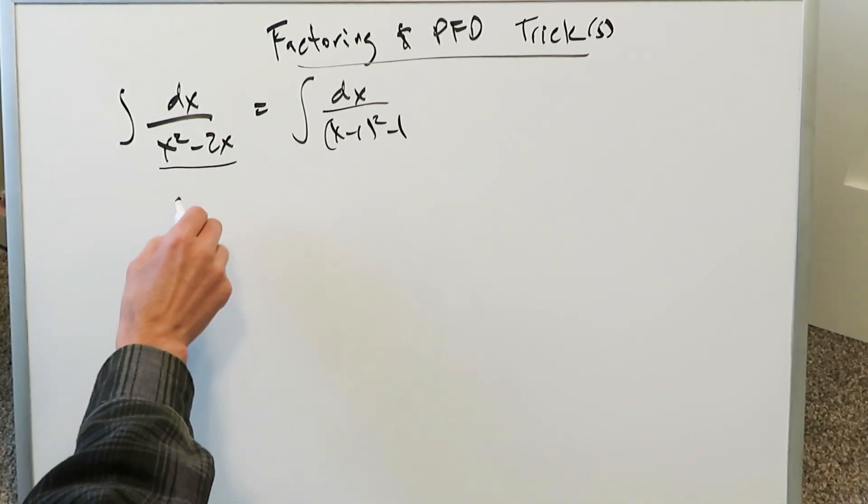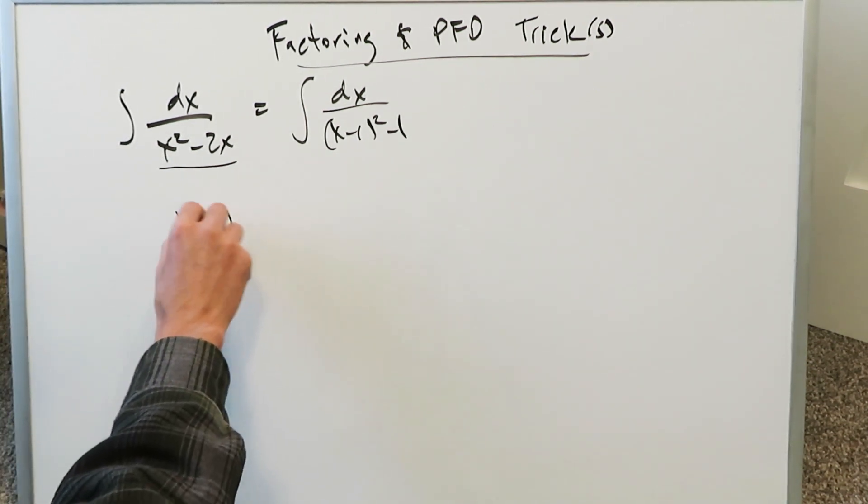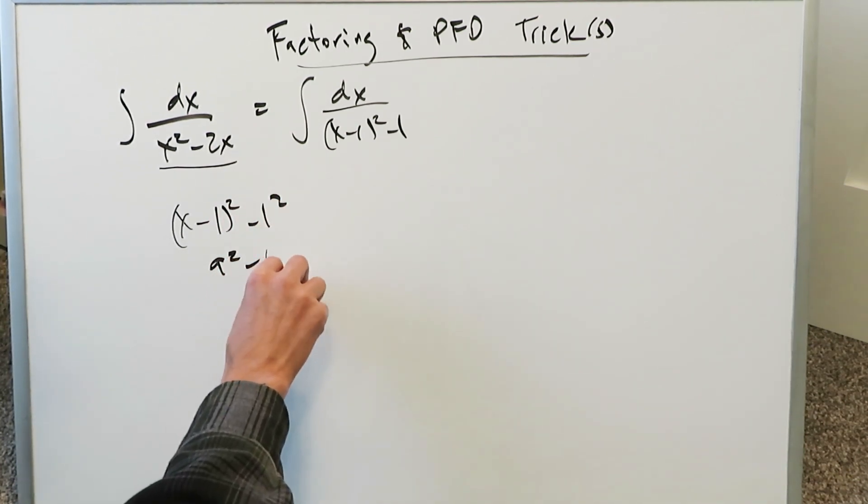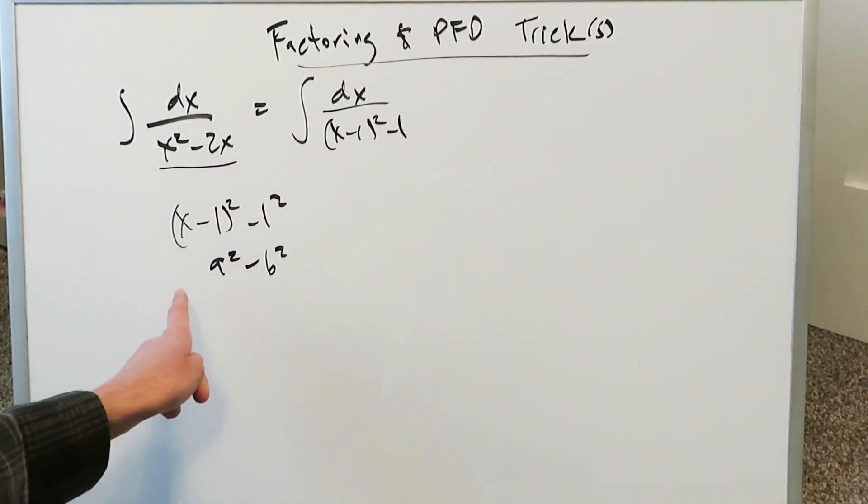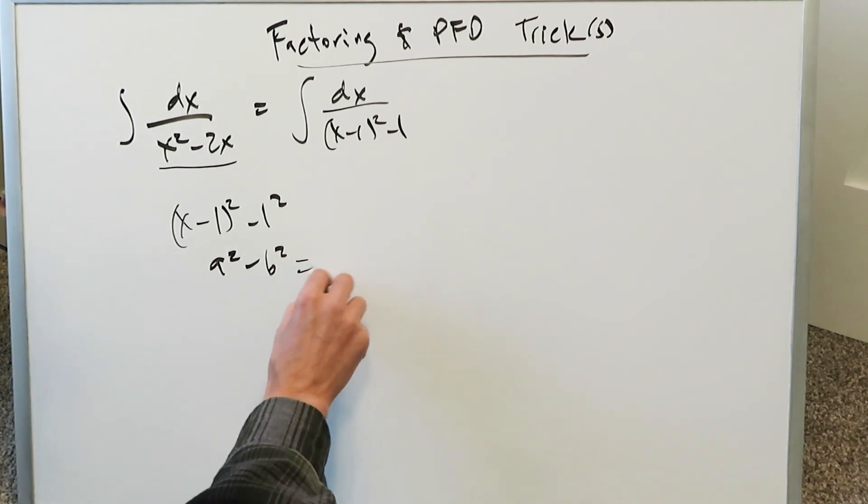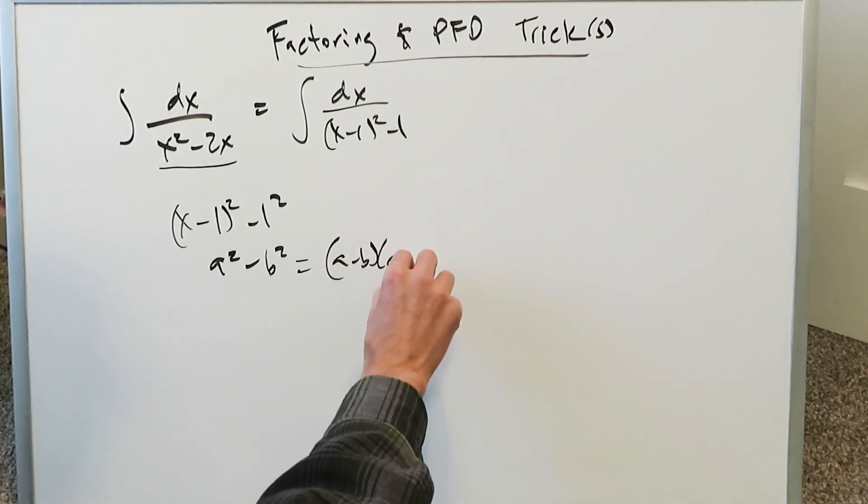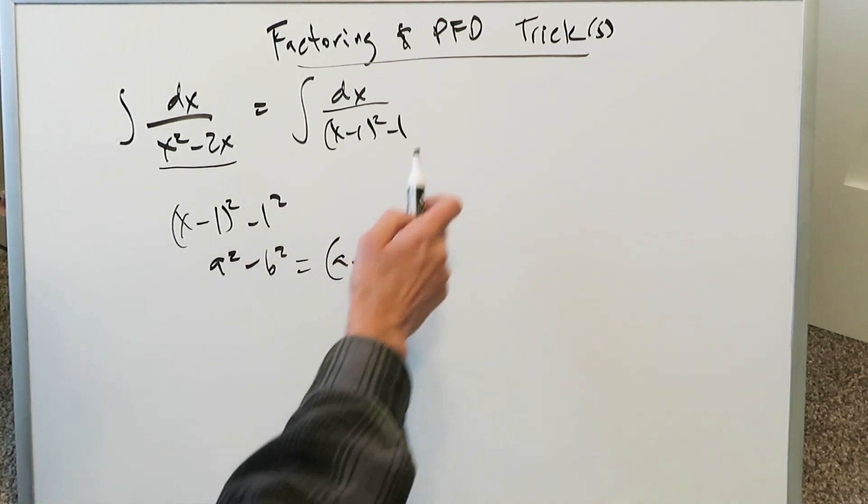When you're looking at that, you're really looking at something which looks like x minus 1 whole square minus 1 squared, which is a squared minus b squared. And right there is perfect. a squared minus b squared is equal to a minus b times a plus b, which is exactly what we'll do with this.